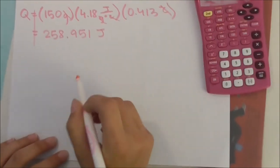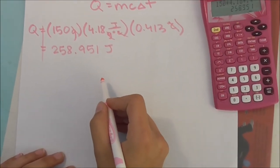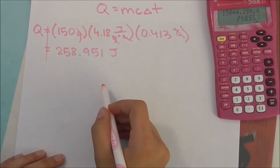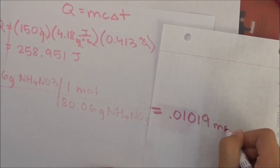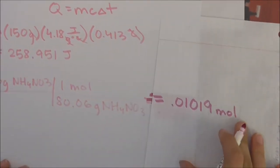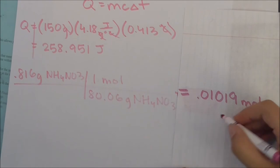Now, remember how I said to disregard the NH4NO3. Now, we change the amount of mass it was given into moles. We get 0.01019 moles of NH4NO3.